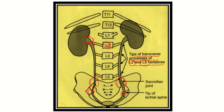At this point, this is the ischial spine. Then finally the ureter reaches into the urinary bladder. Here we can see this is the opening into the urinary bladder.